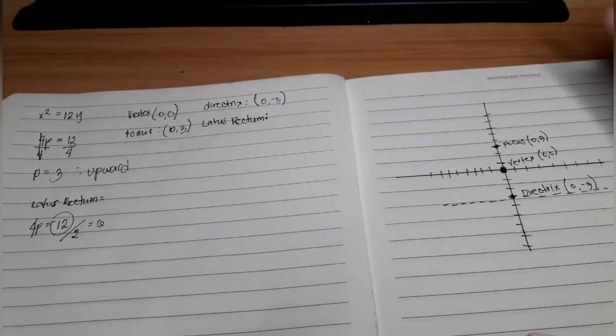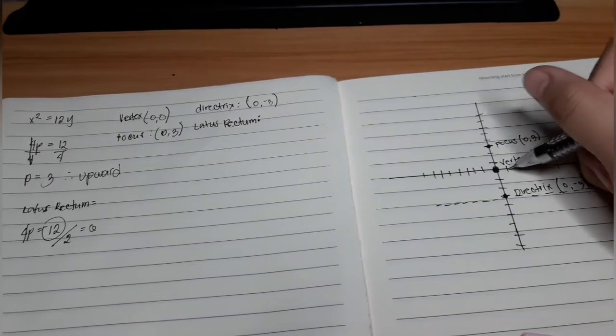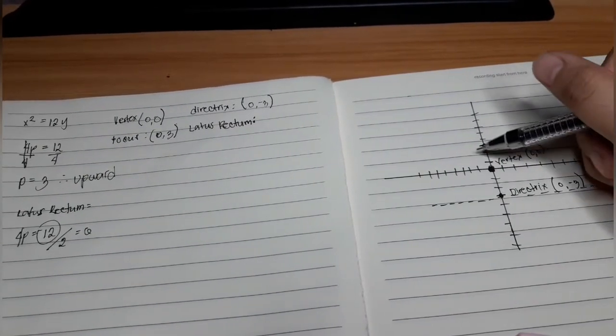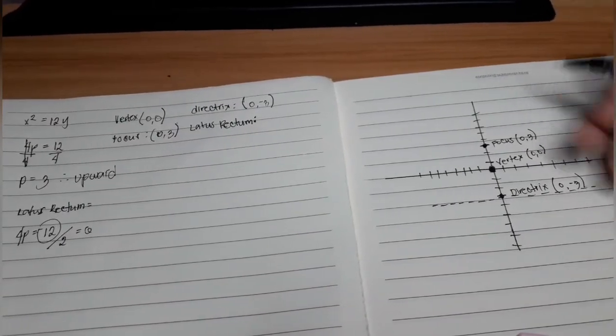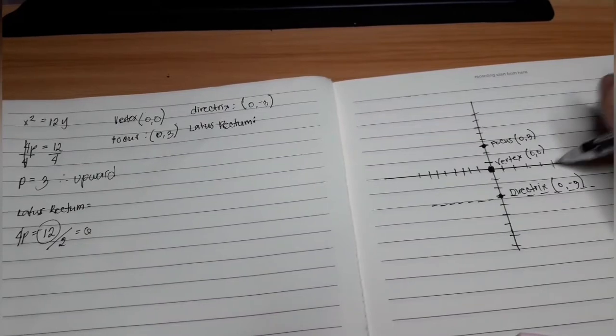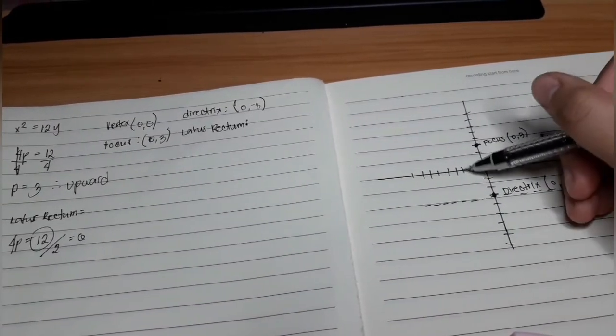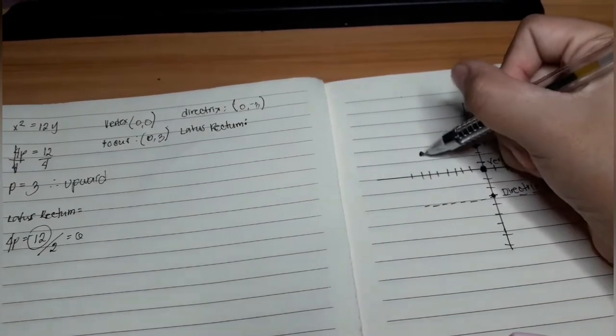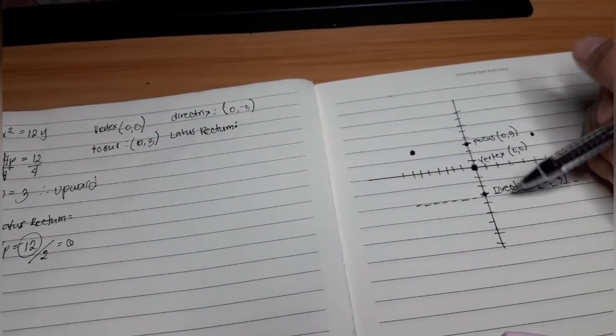We need to move 6 in the left and 6 to the right since there's 2P both sides. So 1, 2, 3, 4, 5, 6. Another 1, 2, 3, 4, 5, 6. It is parallel to the directrix.